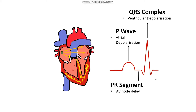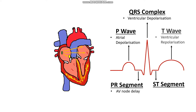Following the QRS complex, we have a period of relative normativity as the heart muscle is contracting. Then we have to reset the heart to pump out blood again, and therefore we must have repolarisation of the heart — and we see this in the form of a T-wave.